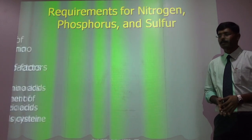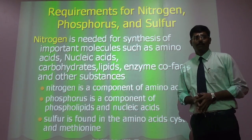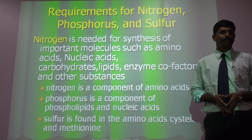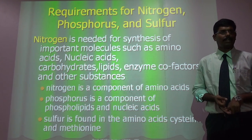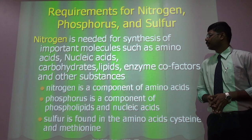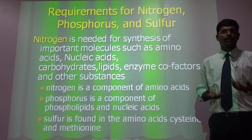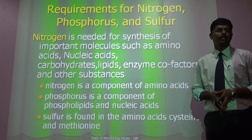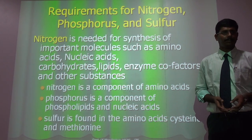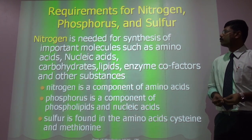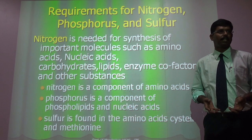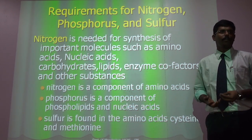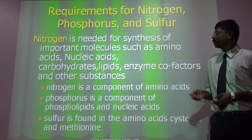Regarding the requirements of nitrogen, phosphorus, and sulfur: in the agricultural field, farmers flood their fields with nitrogen, phosphorus, and sodium or calcium salts — not primarily for the plants, but mainly for the microorganisms. These organisms absorb the nitrogen, phosphorus, and sulfur compounds, and in return promote plant growth and give rich yield.